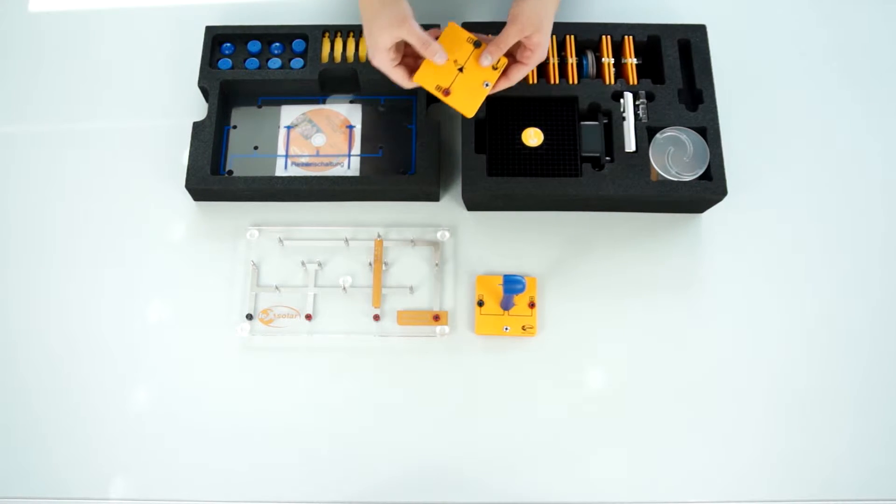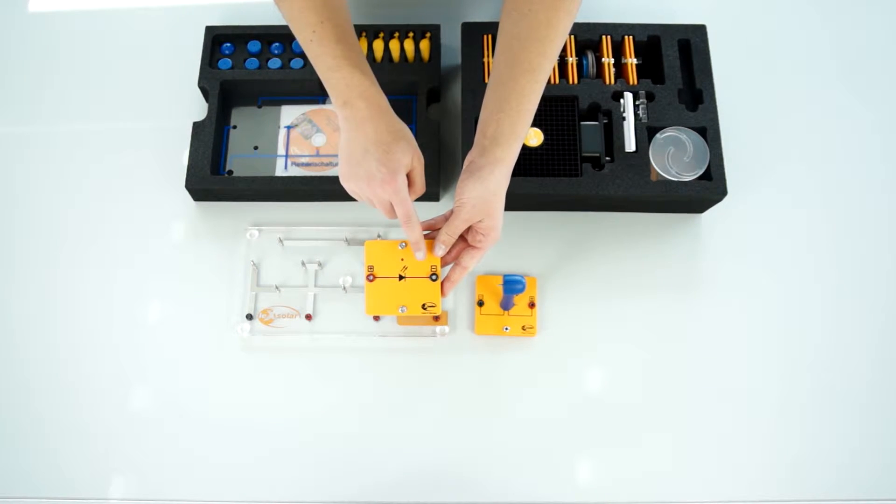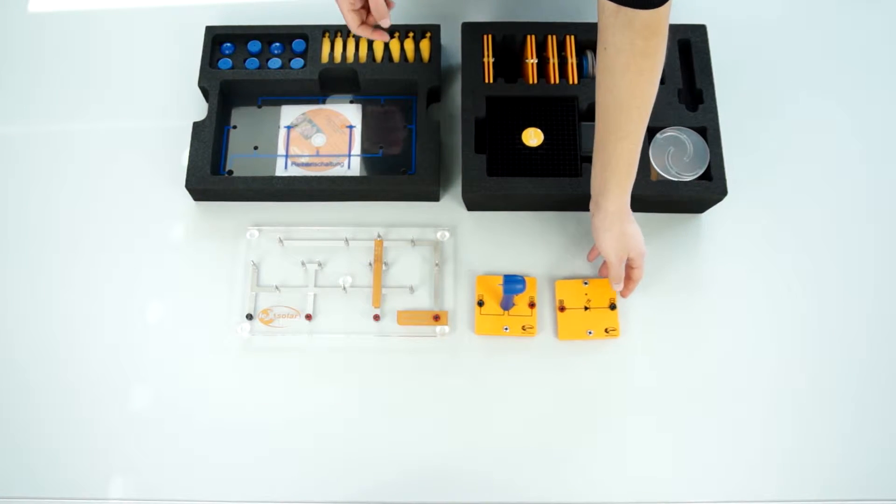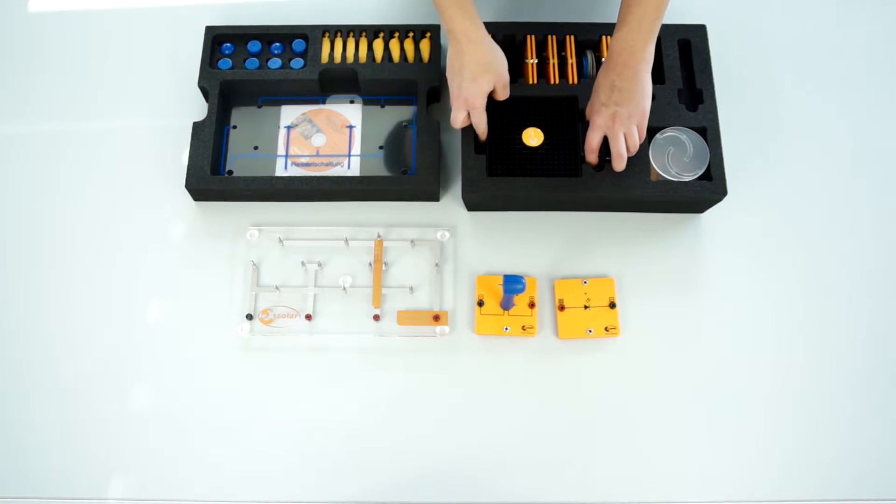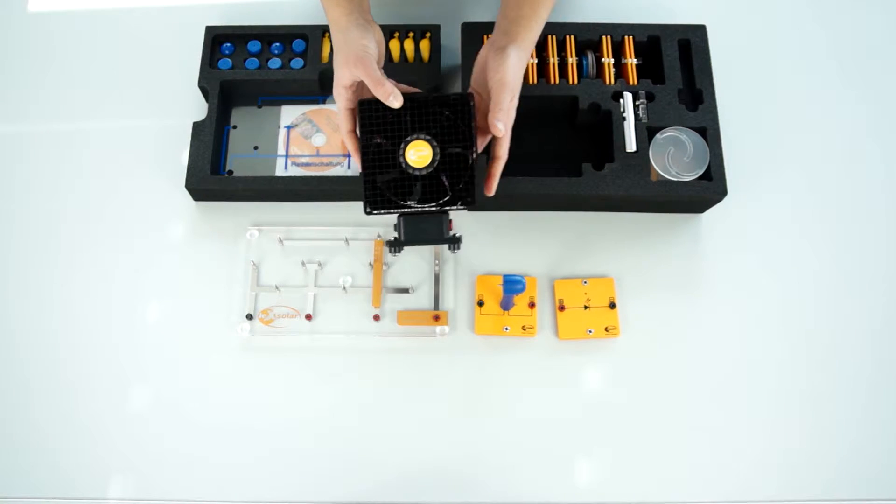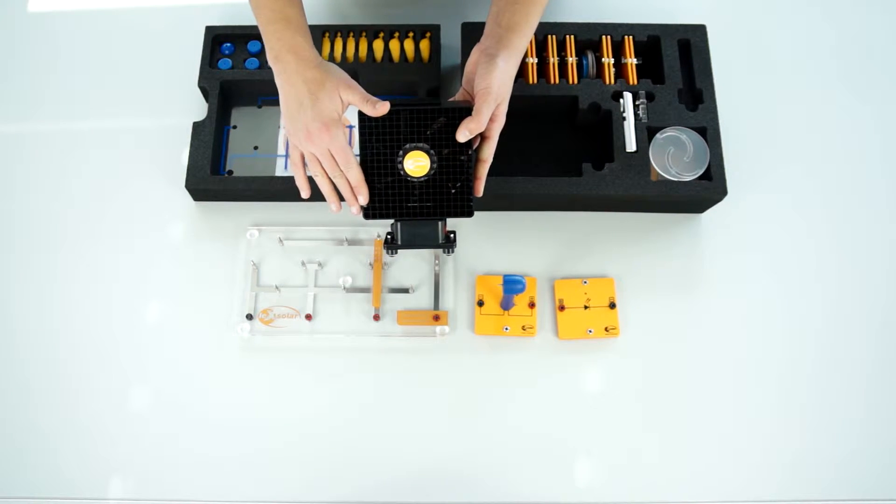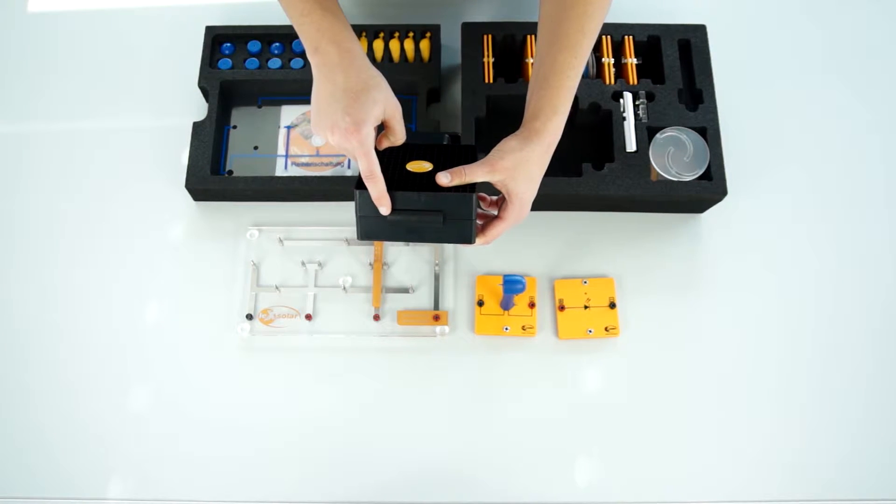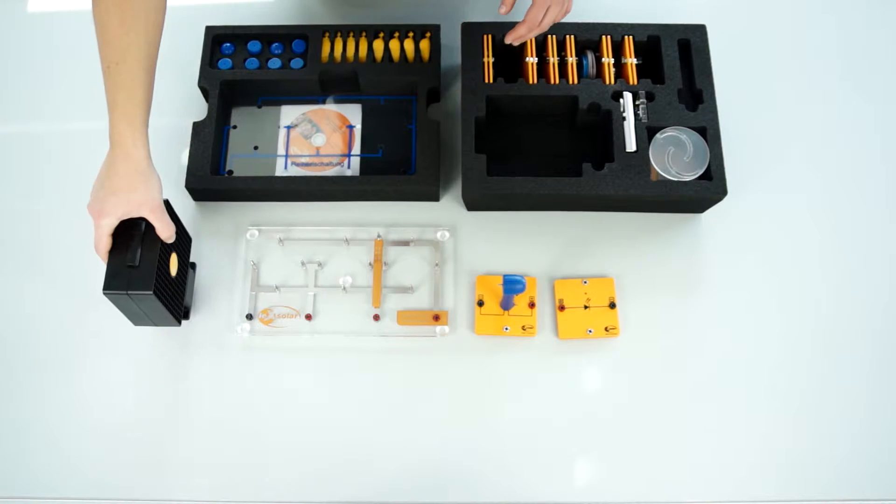For the following experiment we need a light emitting diode which acts as a consumer. Since we want to perform an experiment on wind energy we of course need a wind machine. For generating a laminar flow field the wind machine is equipped with a laminator. The wind direction is indicated by small arrows at the top of the wind machine.